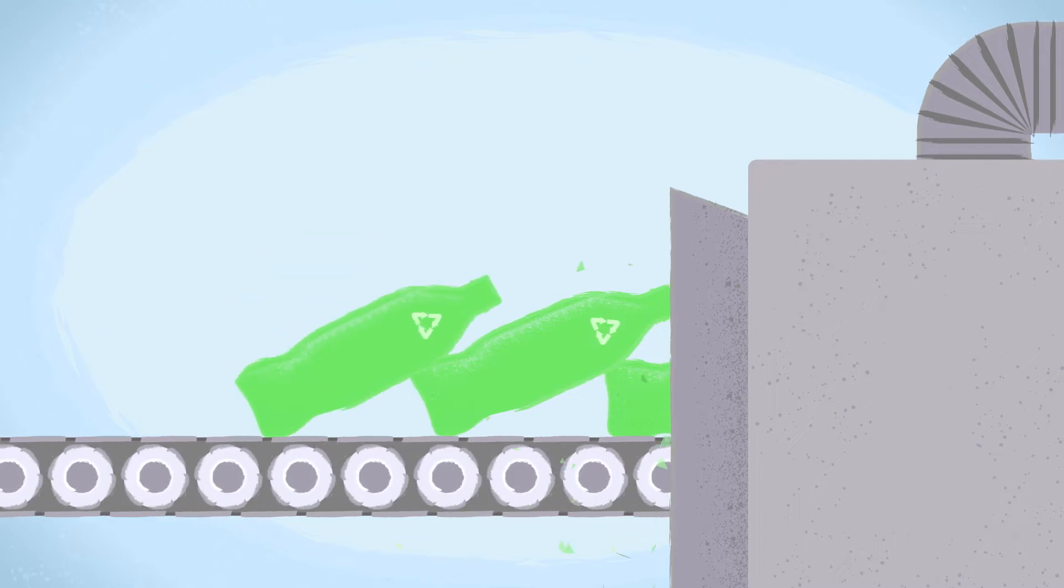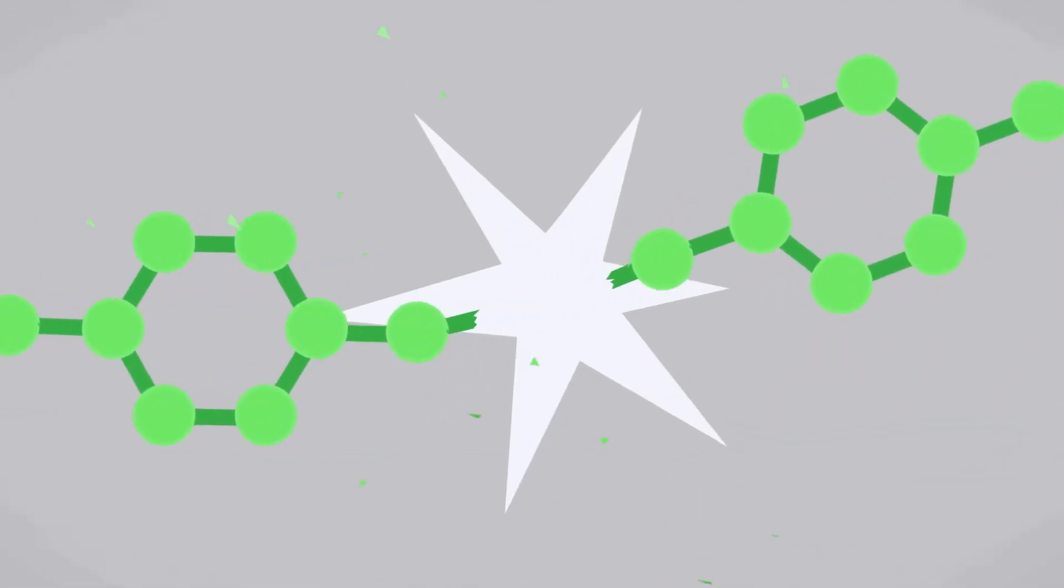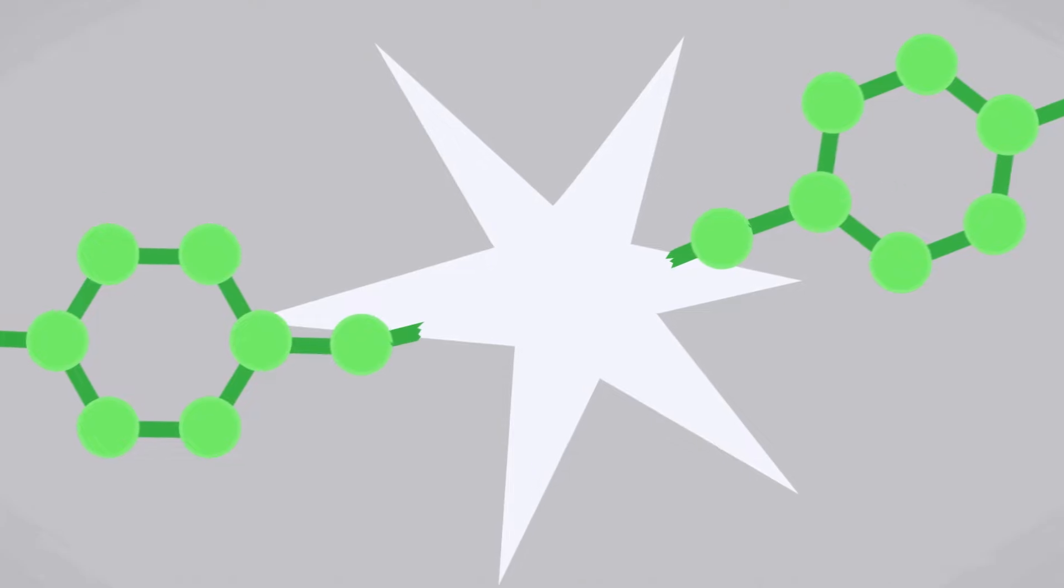When plastic materials are processed or recycled, their molecular bonds can break, causing the material's fundamental properties to weaken.